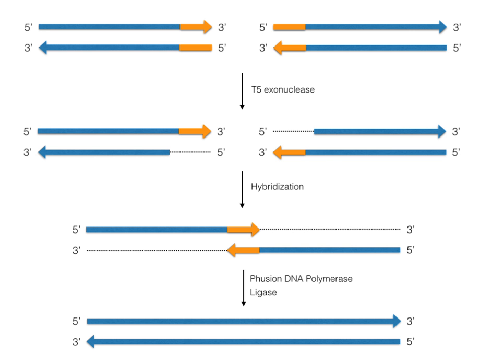An unnatural base pair is a designed subunit or nucleobase of DNA which is created in a laboratory and does not occur in nature. In 2012, a group of American scientists led by Floyd E. Romsberg, a chemical biologist at the Scripps Research Institute in San Diego, California, published that his team designed an unnatural base pair. The two new artificial nucleotides were named D5-SICS and DNA-M.